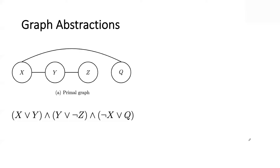The first kind of graph abstraction is known as the primal graph. For every variable in your CNF, you construct a node in the graph. So I have X, Y, Z, Q — those are my variables. If two variables X and Y appear in the same clause, I put an edge between them. So the nodes are the variables, and there is an edge between two nodes if and only if those two variables appear in the same clause.